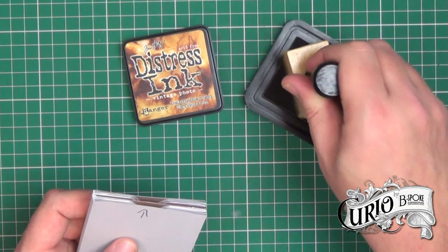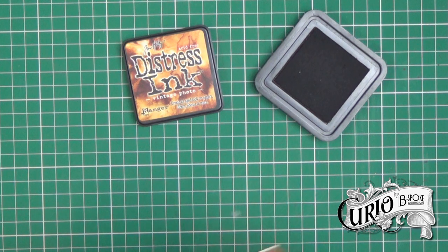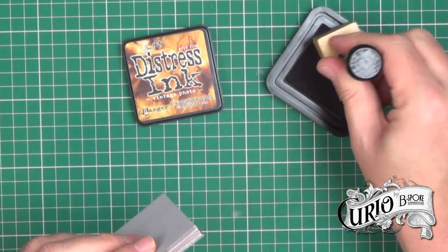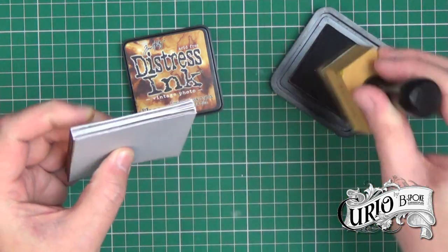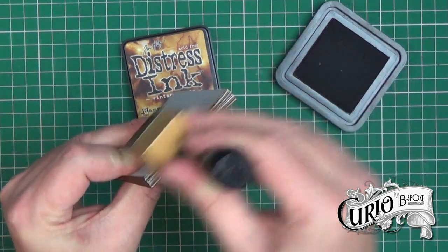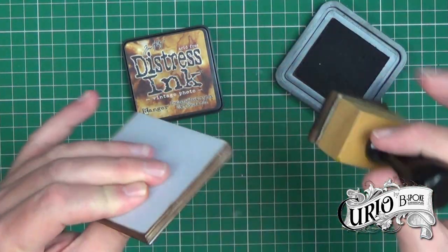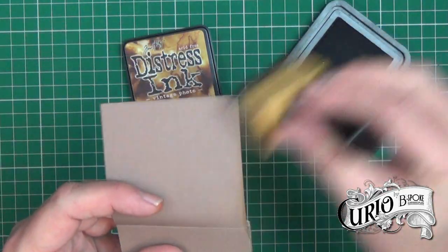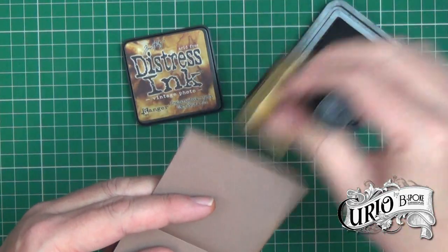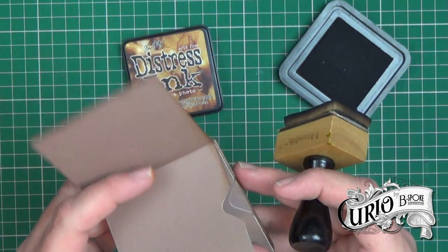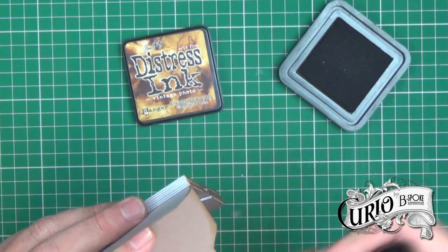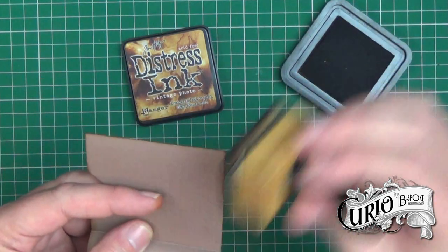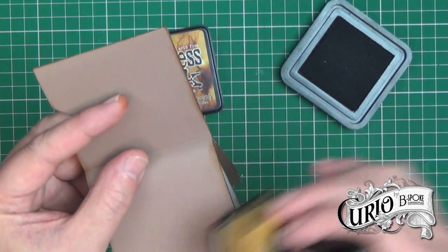I'm taking some distressing ink in Vintage Photo and I'm just distressing the edges of the papers. Of course distressing these as much or as little as you want, you don't need to ink them if you don't want to. It's just how I feel it gives an added dimension.